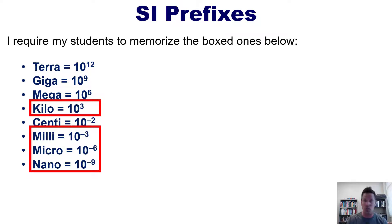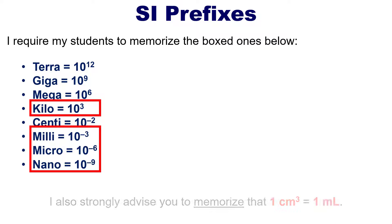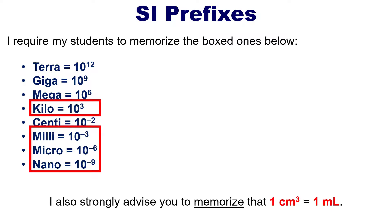As an aside, I also recommend you memorize that one cubic centimeter is the same thing as one milliliter. For any motorcycle fans, engine sizes of motorcycles are frequently reported in CCs — cubic centimeters. One cubic centimeter equals one milliliter, which is a volume amount. I don't require my students to memorize it, but I would recommend it — it'll help make working out calculations a lot faster and easier.